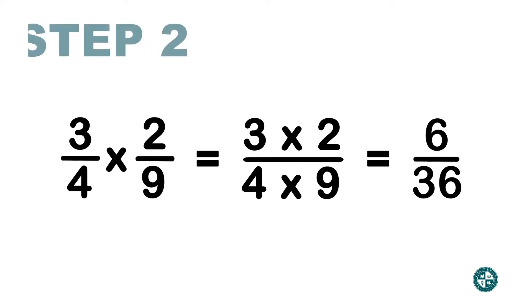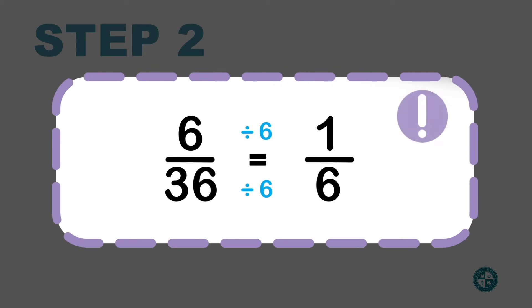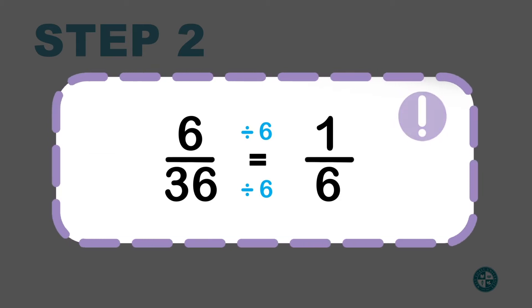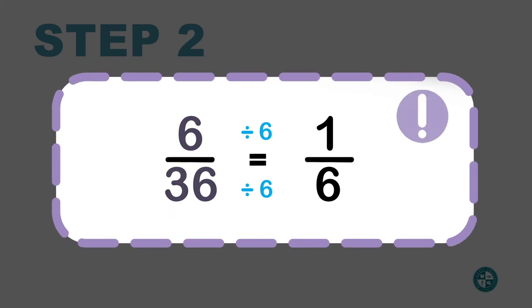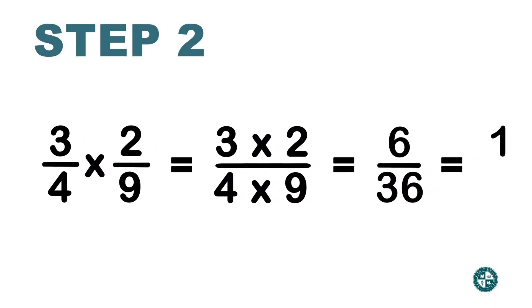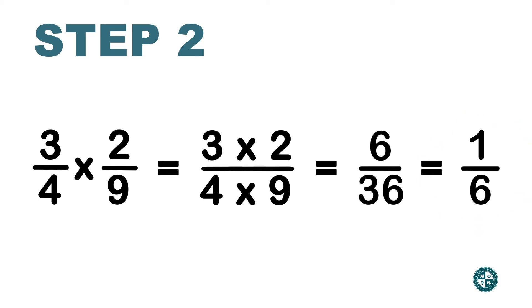Now don't forget you always have to check if you can simplify your answer. 6 can divide the 6 on the top and the 36 on the bottom. So 6 divided by 6 is 1, and 36 divided by 6 is 6. So how do we multiply fractions? Top with top, bottom with bottom.